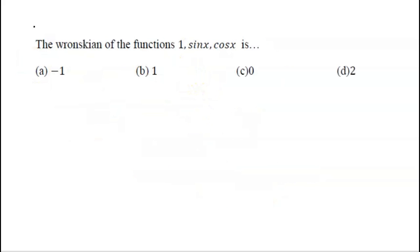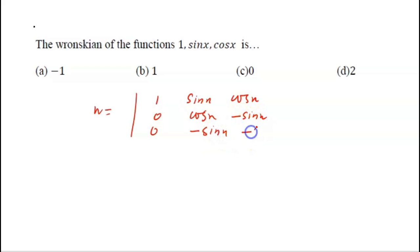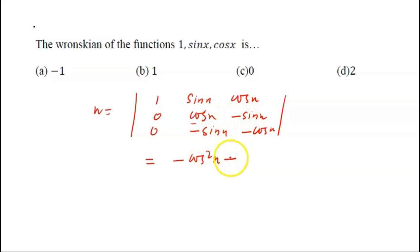Compute the Wronskian of {1, sin x, cos x}. First row: 1, sin x, cos x. Second row: 0, cos x, -sin x. Third row: 0, -sin x, -cos x. Expanding along the first column: 1·(cos x·(-cos x) - (-sin x)(-sin x)) = -(cos²x + sin²x) = -1. The correct answer is -1, option A.